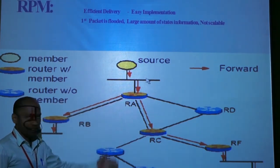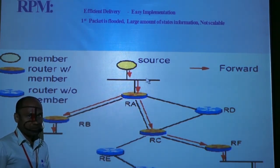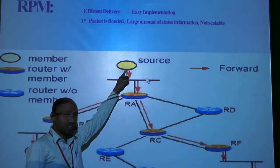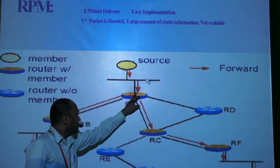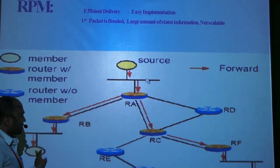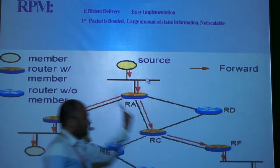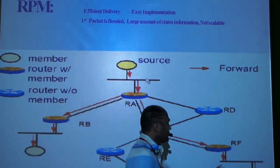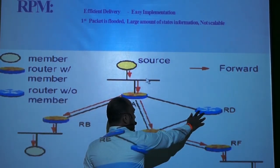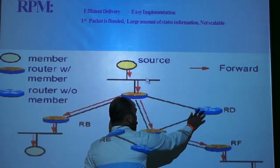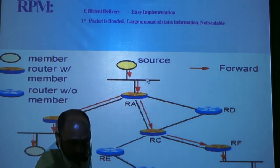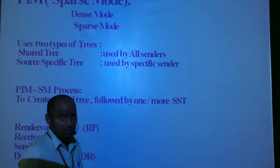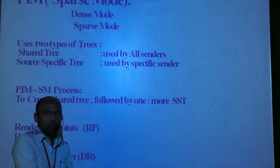The result of this process is reverse path multicast. This is the actual shape of a reverse path multicast: the source sends the packet, and only nodes with members receive it. Nodes without any members do not receive those packets. This is how DVMRP works.